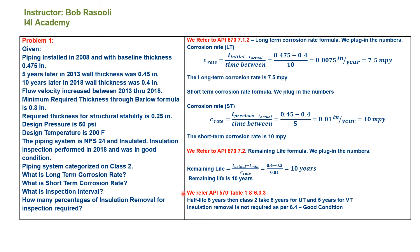We refer to API 570 Table 1 and section 6.3.3. Half-life is 5 years, so for Class 2, the inspection interval is 5 years for UT and 5 years for VT.